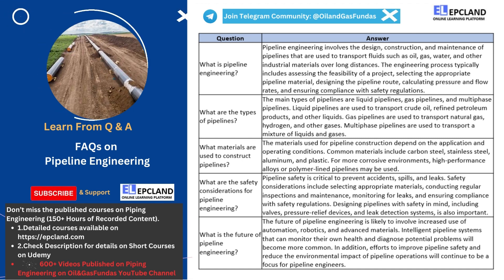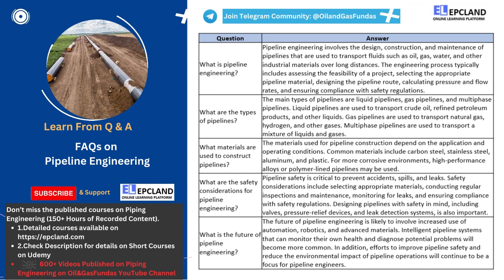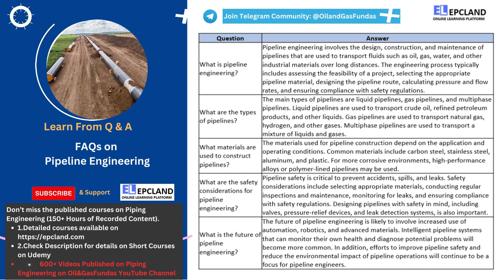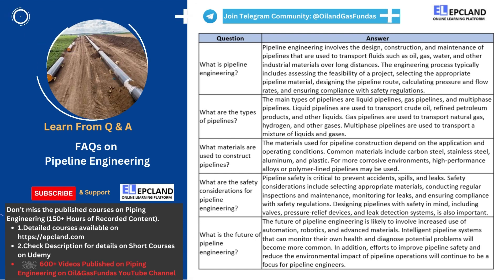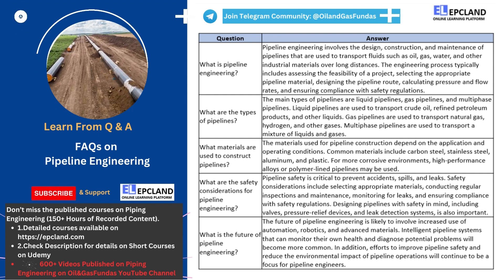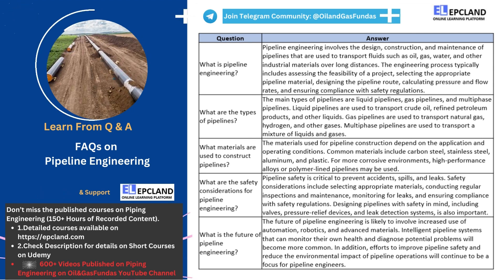Advanced materials, such as composites and nanomaterials, can improve the strength, durability, and resistance of pipelines to environmental factors. Intelligent pipeline systems are also likely to become more common, able to monitor their own health and diagnose potential problems, allowing for prompt and efficient responses. These systems can help identify leaks, corrosion, and other issues before they become significant problems, reducing downtime and maintenance costs. The future of pipeline engineering will also focus on efforts to improve pipeline safety and reduce the environmental impact of pipeline operations.